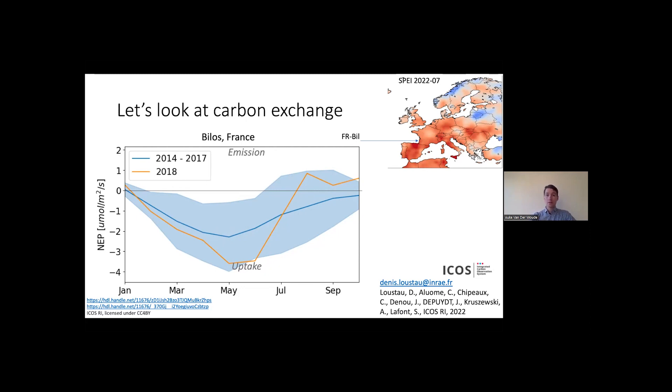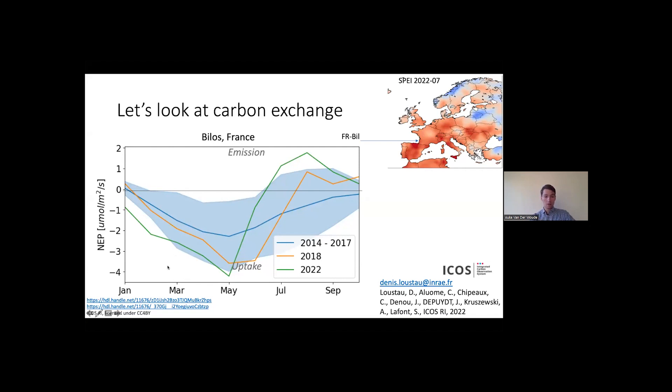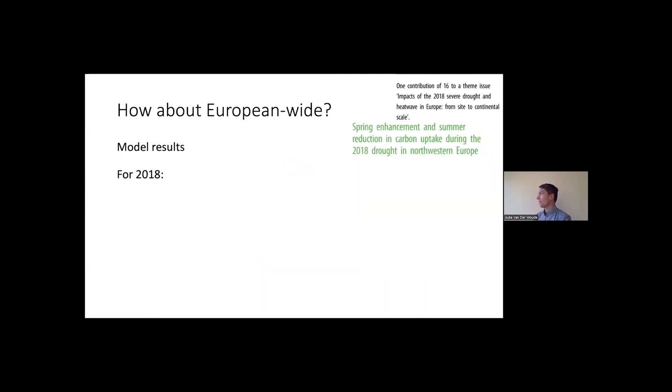However, when we look at 2022, we see an even stronger response. We see a very strong spring uptake starting from March and April. Then in May, it is very anomalous even. But then the drought hits, and the ecosystem becomes quite a big source of CO2. So this means at this time from July onwards, this site has not taken up CO2 anymore, but has emitted it into the atmosphere. And this is only for one site, of course, and this could be an extreme case because it's a forest site.